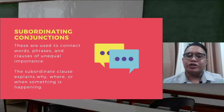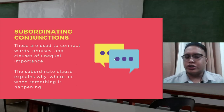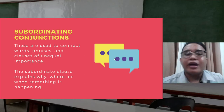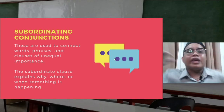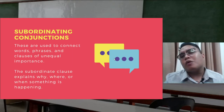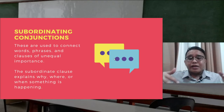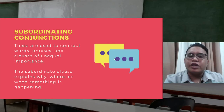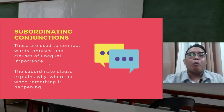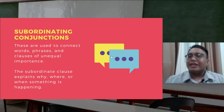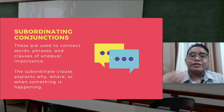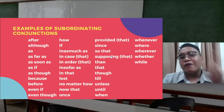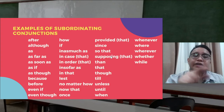Next are subordinating conjunctions. These are used to connect words, phrases, and clauses of unequal importance — unlike coordinating conjunctions, which connect elements of equal importance. The subordinate clause explains why, where, or when something is happening. Please pause this video and list the subordinating conjunctions shown on screen.